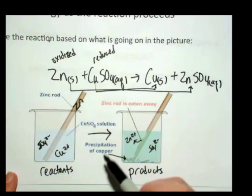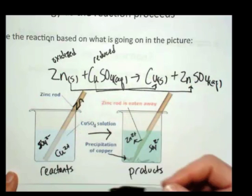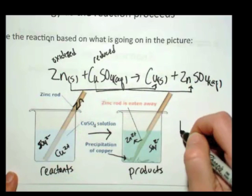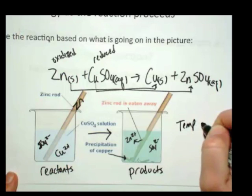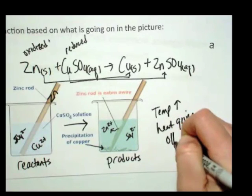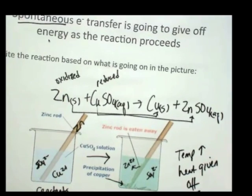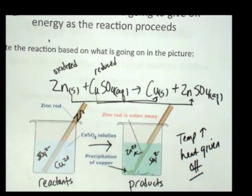Spontaneous energy is given off. If I had a thermometer that I stuck down in here with these reactants, I would see that the temperature goes up a little bit. A little bit of heat is given off. Heat given off. It's an exothermic reaction.